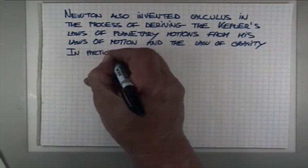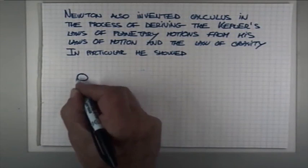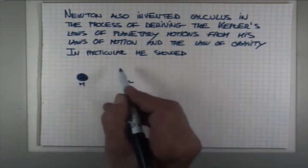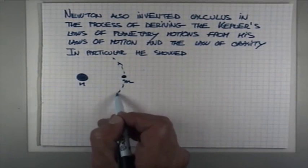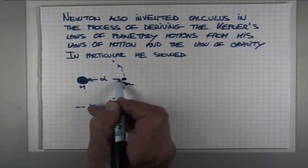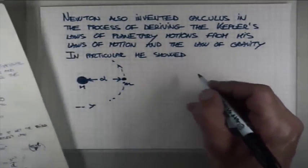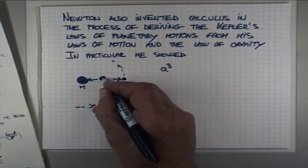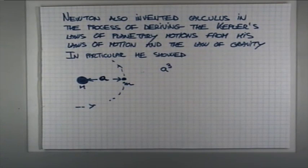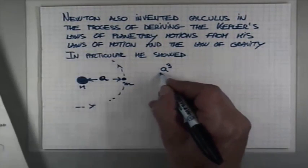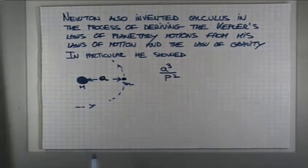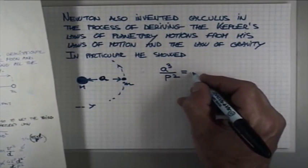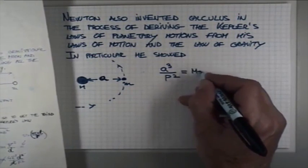In particular, he showed that when interacting by a force of gravity, and they are orbiting each other, or the smaller mass object is revolving around the bigger mass object at distance d, that if you take the distance between them and cube it, and divide with the period squared, you get a value which is essentially proportional to the total mass of the two objects.